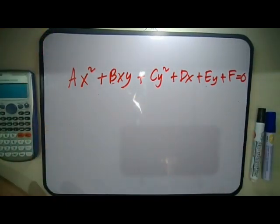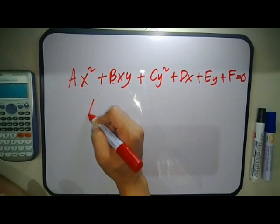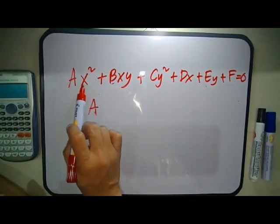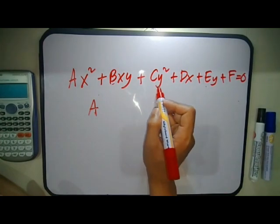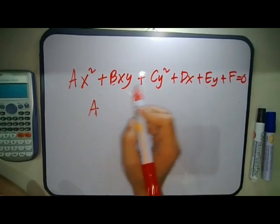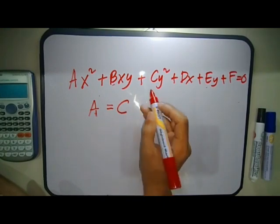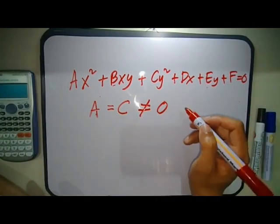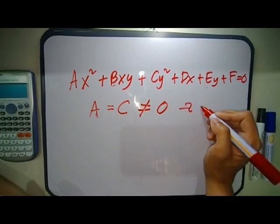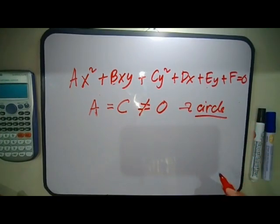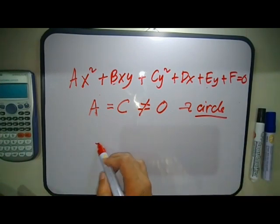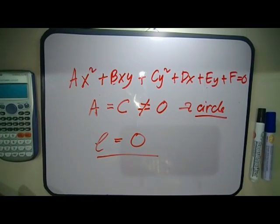Now, how do we identify a circle from the general equation of a conic section? If the coefficient A of x² and the coefficient C of y² are equal but not equal to zero, then it is a circle. Also, the eccentricity of a circle is zero since it doesn't have a focus — it only has a center.